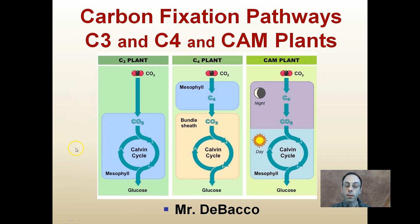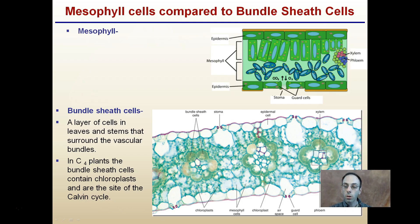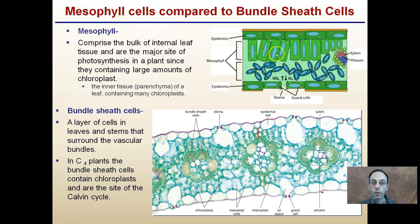What I've been talking about so far is a C3 plant, and that's the most simplest of forms. The mesophyll compromises the bulk of internal leaf tissue and the majority site of the photosynthetic process in plants, since they contain large amounts of chloroplast.